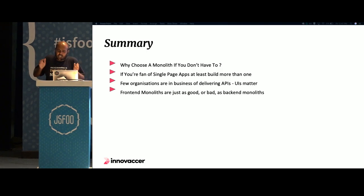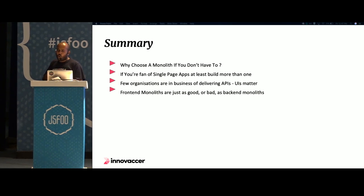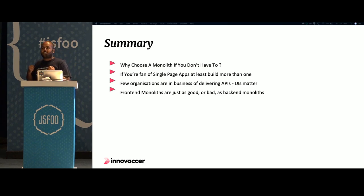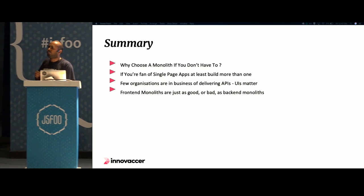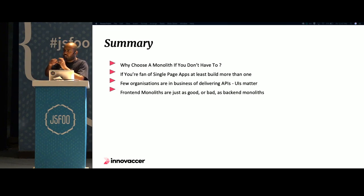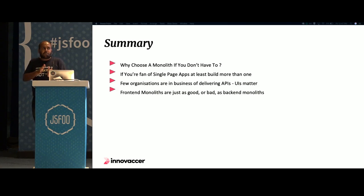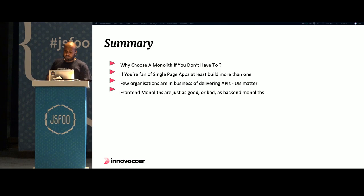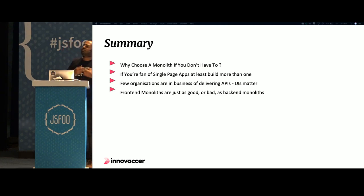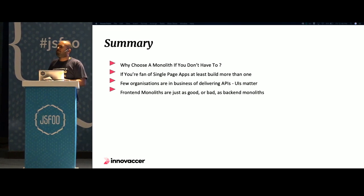To summarize: as the frontend continues to grow and get more complex, there is a growing need for more scalable architecture. We need to draw clear boundaries and establish the right level of cohesion and coupling between different domain entities, which allows us to deliver reliable and scalable software at a fast pace and have autonomous teams. While far from the only approach, we have been able to very successfully apply this micro frontend architecture on our frontend and reap a lot of benefits. I can only hope these strategies will become the de facto way of developing large web applications going forward.